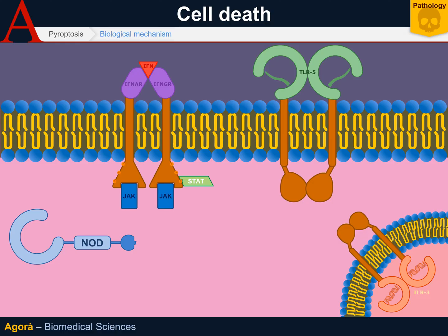Through these four receptors, a molecule called NLRP3 or NALP3 is activated. This molecule forms a complex with two heat shock proteins, Hsp90 and SGT1. The activation of these receptors is capable of disassociating the NALP3 complex from its inhibitors, and NALP3 then induces the activation of the inflammatory cell process.